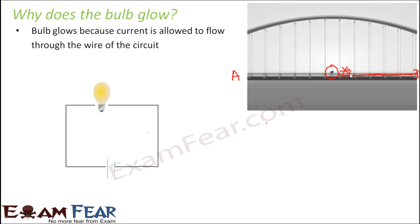In that case, do you think the cyclist will be able to reach town B? No — because even though the path is there, he is not allowed to move. In a very similar way, in a circuit, even if the circuit is complete, if the wires do not allow current to flow through them, then current will not flow.